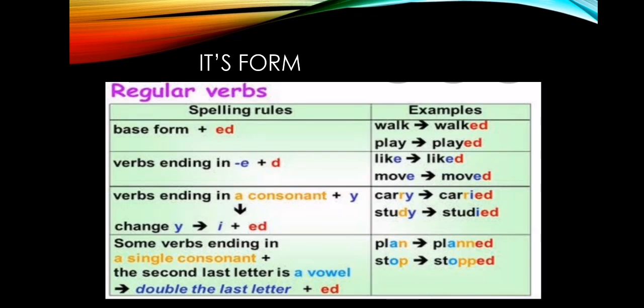Second spelling rule: a verb ending in -e, we add only -d. Like 'like' ending in -e, it will be 'liked'. 'Move' ending in -e, it will be 'moved'.